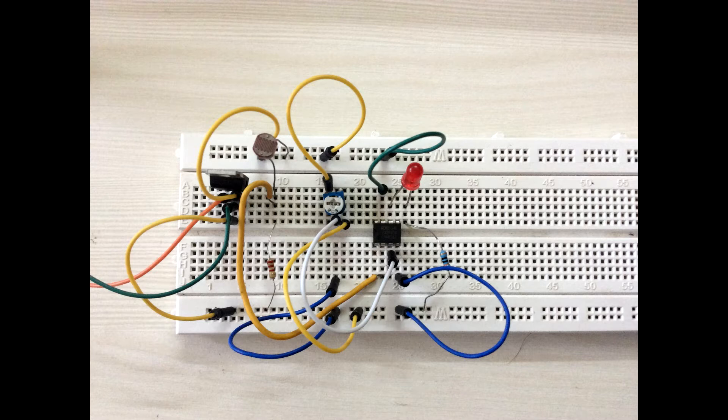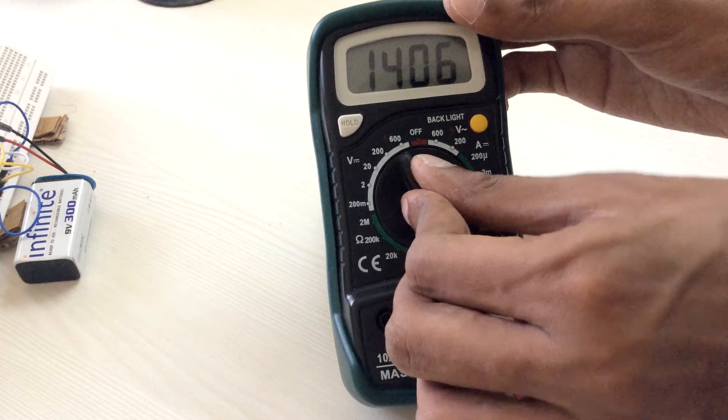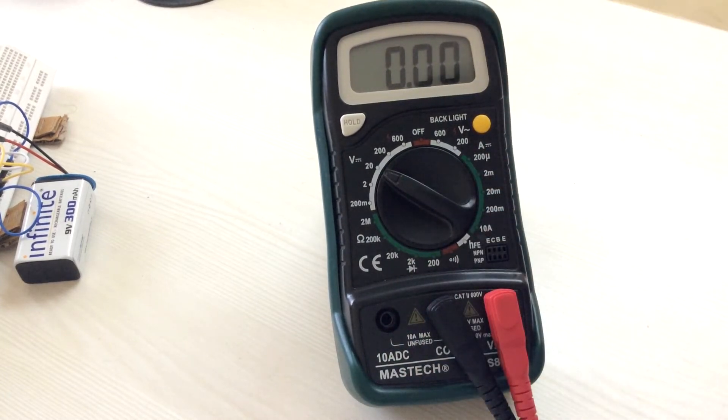Now let us check if each component in the circuit is working fine. Turn the DMM into 20V DC mode. You can connect the battery to your circuit now.